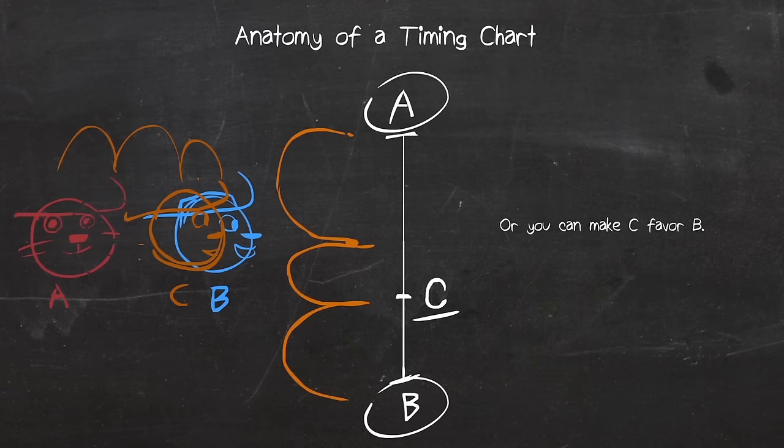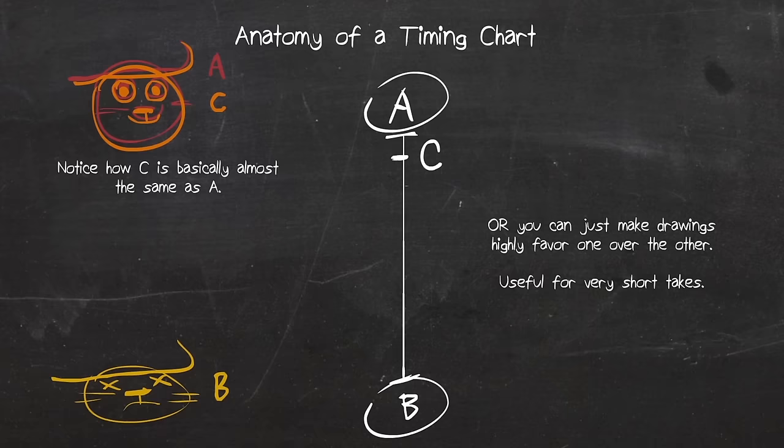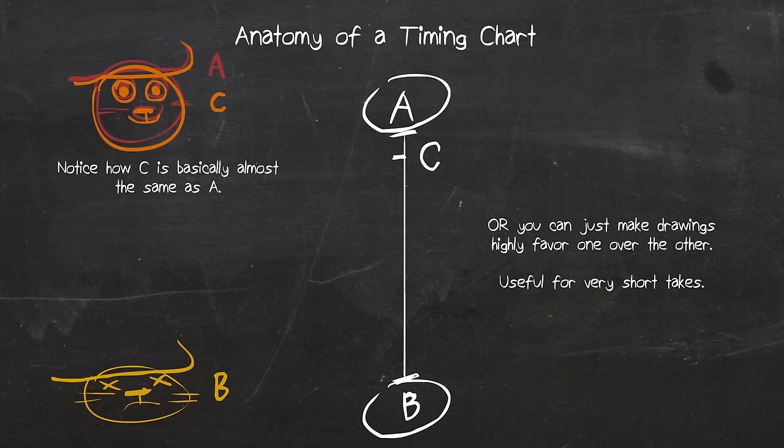I only usually use thirds when I'm animating long and slow scenes, or when the context is really specific. Speaking of specificness, let's talk about the last example, favoring. While it does not have any curves, it's clear that C is pretty much almost similar to drawing A. Notice an example how C is basically almost the same thing as A, but has a very small influence of B in it. B is the dead head down there. That's just me exaggerating favoring. I usually use these for very short bits, or things that play fast. It gives a snappy energy in the animation.